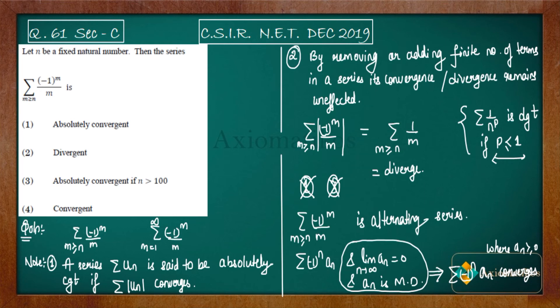Now in your problem, what is your a_n? Your a_n is 1/m. Do I need to prove that it is decreasing? No, there is no need because it is obvious that if you increase the denominator, your quantity will automatically decrease. Therefore it's a decreasing sequence.